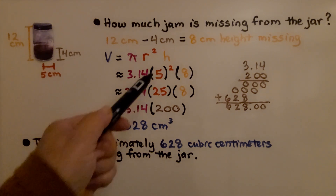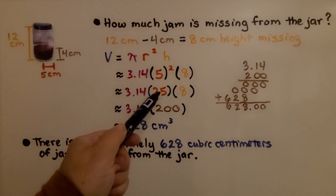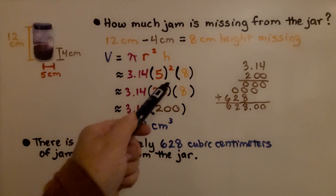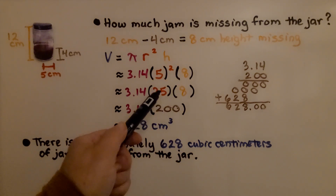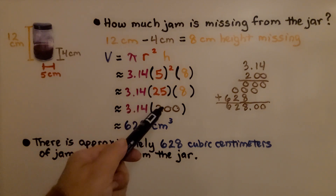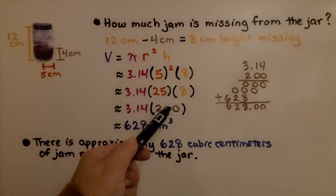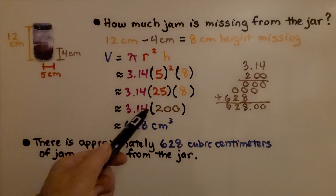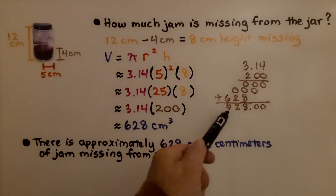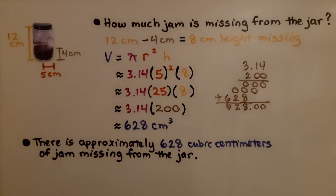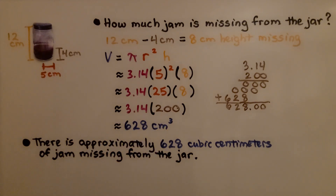We multiply 5 times 5 and get 25. We can multiply 25 times 8 easily with mental math — that's 200, like eight quarters making two dollars. So it's 200. We multiply 3.14 times 200 and get 628. There are approximately 628 cubic centimeters of jam missing from the jar.